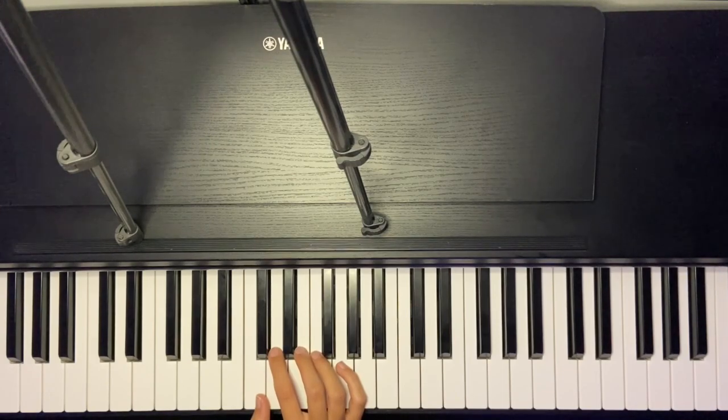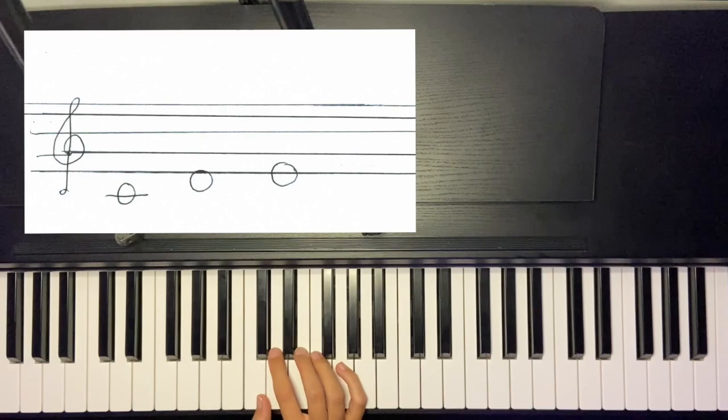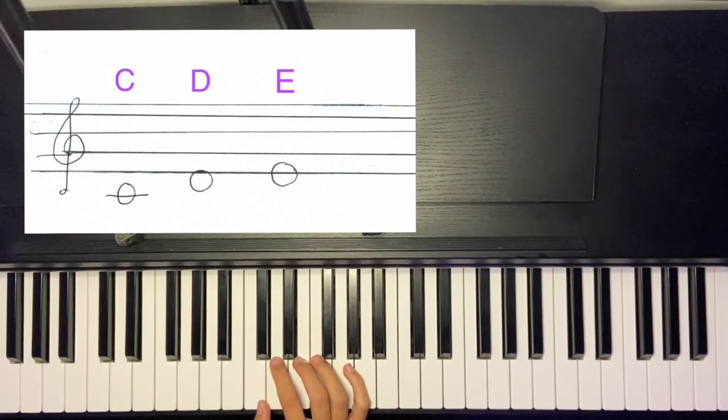Hi everyone, welcome back. In today's video we're going to remember the notes that we learned in the previous video. And these were C, D and E. Now C looks like this, looks like a circle with a line across it and it's just underneath the five lines of the treble clef.